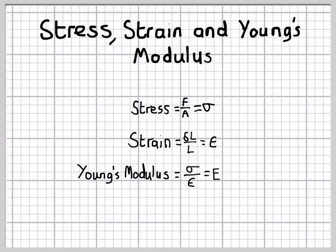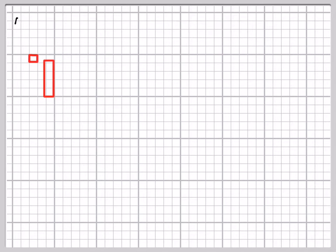There are three quantities that appear again and again in structural analysis to do with materials. These are stress, strain, and Young's modulus, which have the standard definitions as given here. But what are these quantities and why are they so useful?